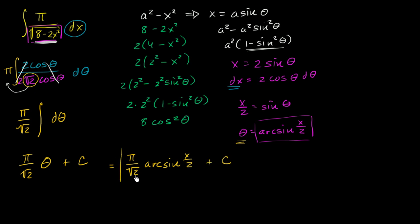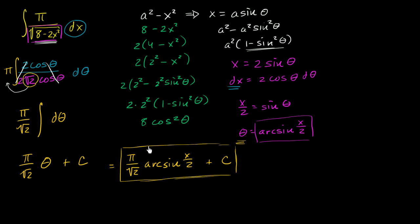Some people don't like a square root of 2 in the denominator. If you want to remove it, you can multiply by square root of 2 over square root of 2. But right now I'll just leave the denominator in irrational form. And this right over here is our antiderivative.